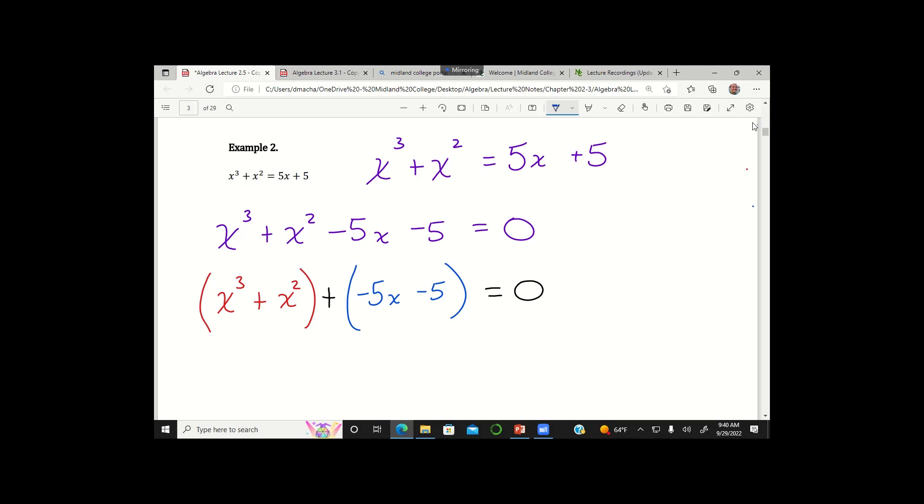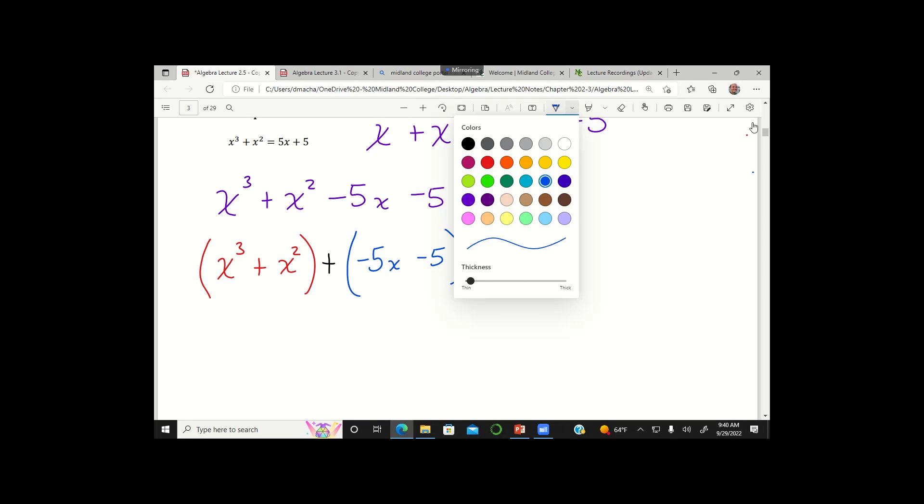And now for each of those little groups, for the first two terms and for the second two terms, I'm going to ask myself what's the greatest common factor. So for just the red grouping, the x cubed plus x squared, the greatest common factor would be x squared. So if I factor out an x squared, what I'm left with is x plus 1.